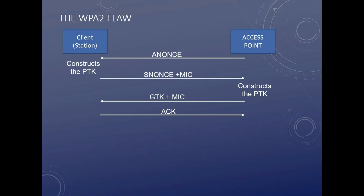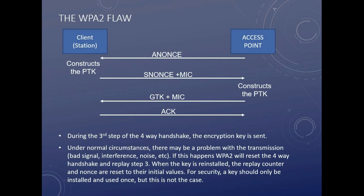So where's the flaw? The flaw is in the third step — the encryption key is set in the third step, the GTK. There are times, even normally, where the four-way handshake just doesn't complete — the access point doesn't get an acknowledgement back from the station due to interference, noise, or a bad signal. WPA2 will reset the four-way handshake and resend step number three — it's going to resend the key. Under normal circumstances you didn't get the key anyway, so it's not a problem. But what if you did get the key? The key is going to be reinstalled.